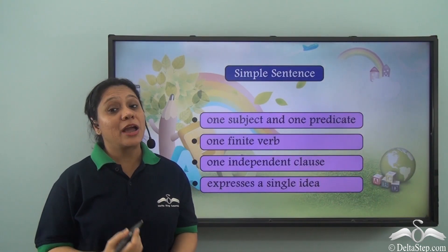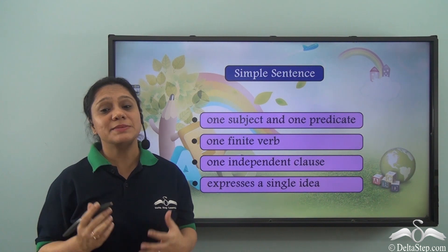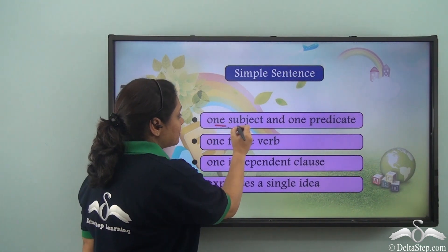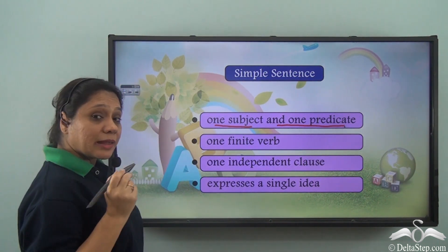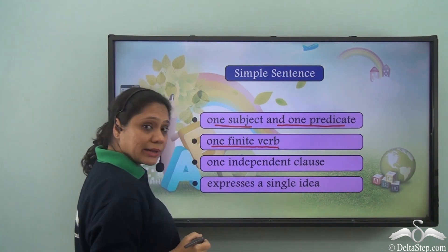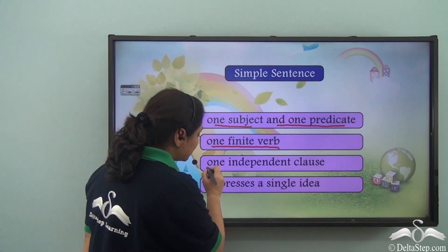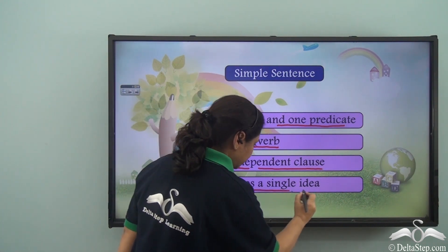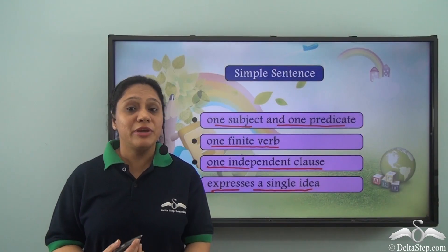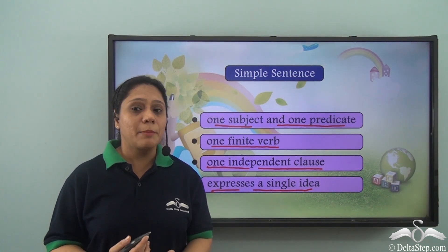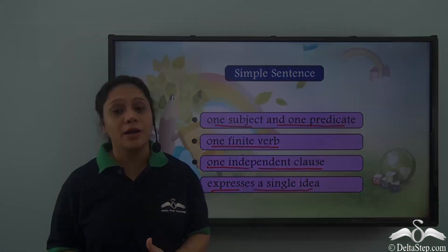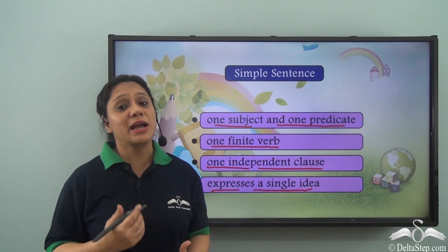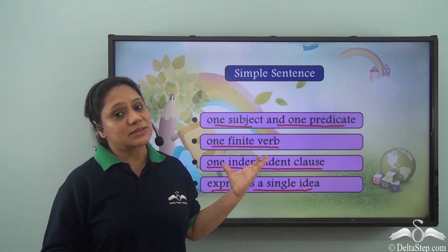What did we learn today? There are different kinds of sentences based on their structure. A simple sentence has one subject and one predicate, the predicate has one finite verb only, it is made up of one independent clause, and it expresses a single idea only. Practice by taking many exercises to identify whether a sentence is simple or not.